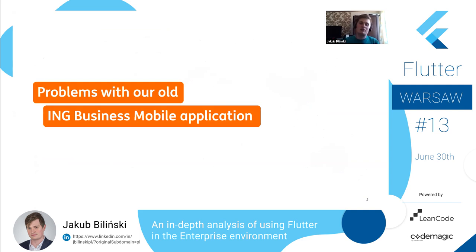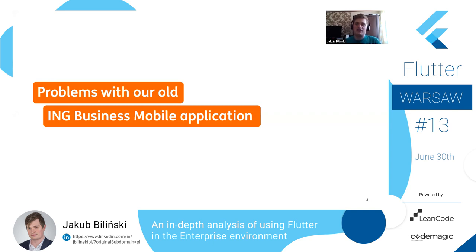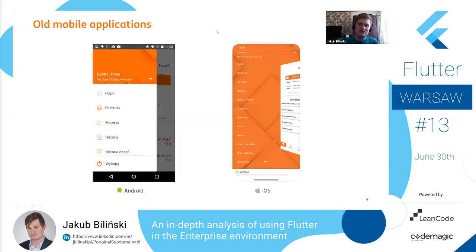We had an old application before we started developing our new application. It was a native application written for both Android and iOS, and it wasn't the best application — people didn't like it. On Google Play we scored 2.2 out of 5, which means it was a terrible application for some people. On the App Store we scored 4 out of 5.